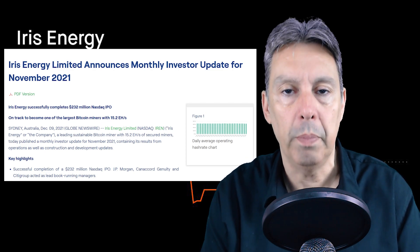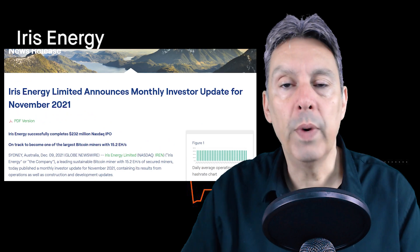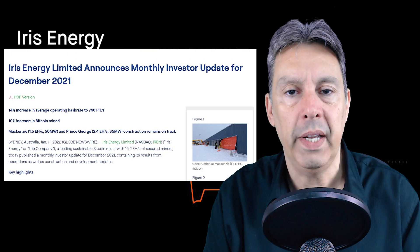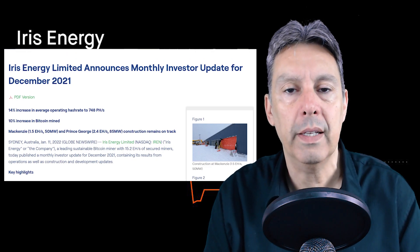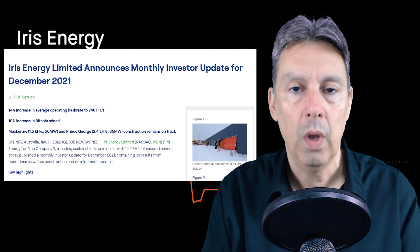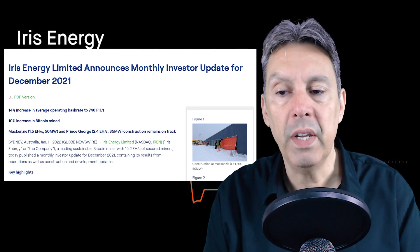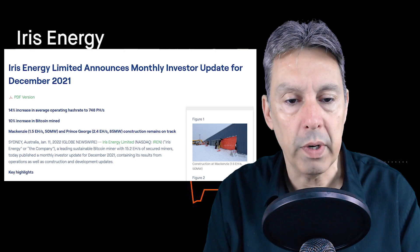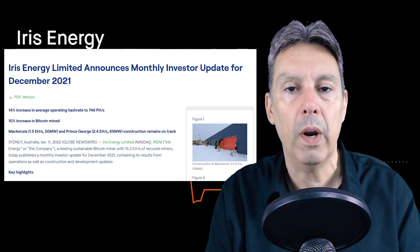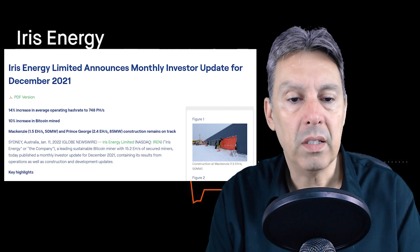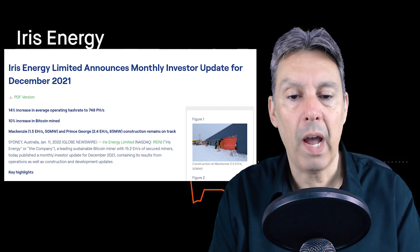This is their most recent press release and this really has all the meat and potatoes. This goes through in great detail exactly what they plan to do. So let's take a close look at this one. Iris Energy Limited announces monthly investor update for December 2021. This was put out on January 11, 2022, just a few days ago. They've highlighted at the top a 14% increase in average operating hash rate to 748 petahash, or 0.748, about three quarters of an exahash.